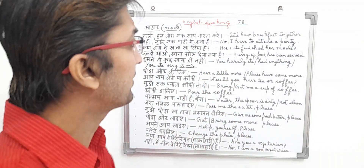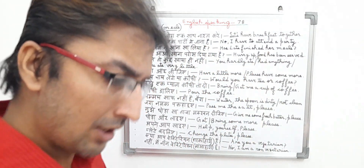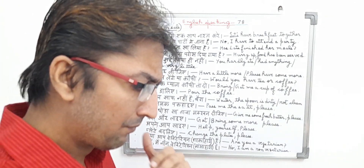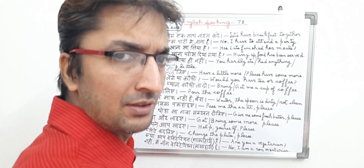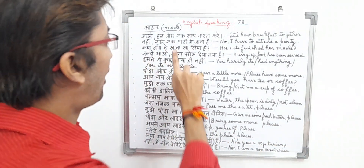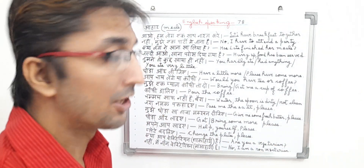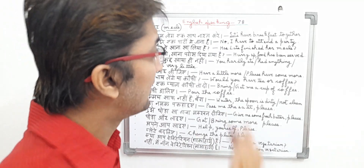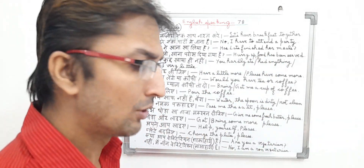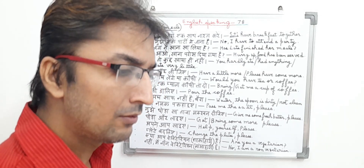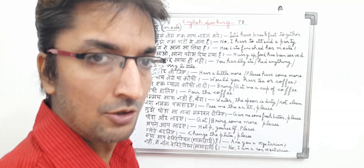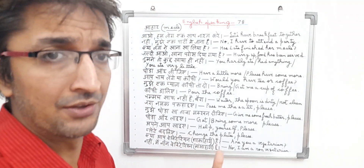In English, it means 'Let's have breakfast together.' The sentence basically means the person is inviting another person or a group of persons to have breakfast together. In English, it means 'Let's have breakfast together.' Breakfast is usually taken in the morning, so the person is inviting a group of persons to have breakfast together. It's a meal type sentence.